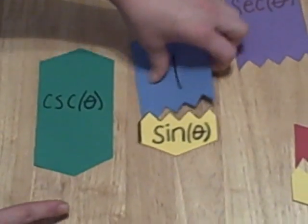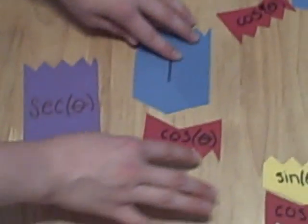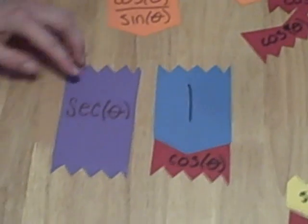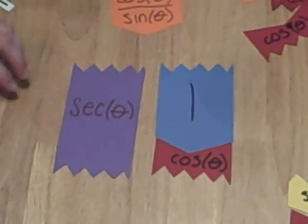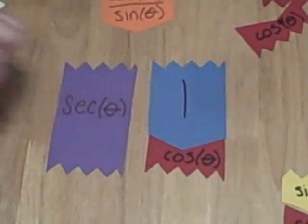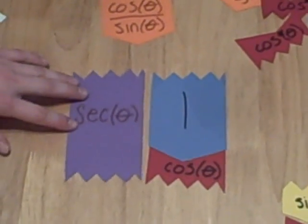The 1 can also be flipped over to go on top of cosine, making the same shape as secant. Still notice that since 1 is blue and cosine is red, secant is purple.